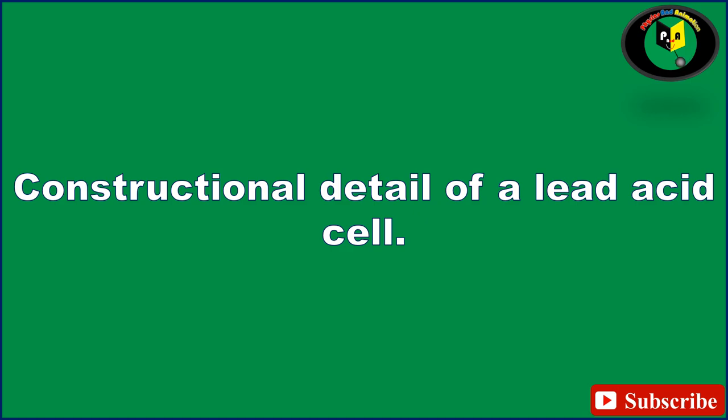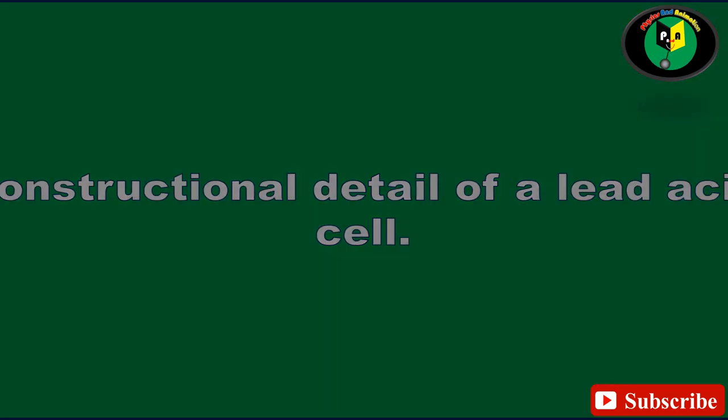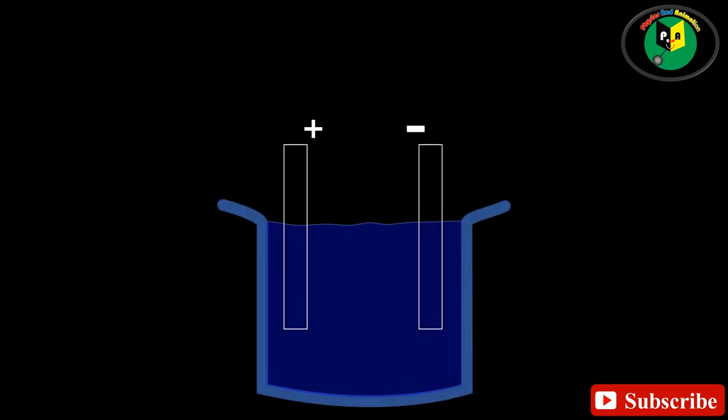The constructional detail of lead acid cell. The most common parts of any type of batteries are: 1. Positive plate. 2. Negative plate. 3. Electrolyte. 4.